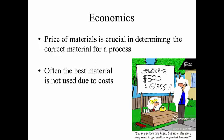So here we are talking about economics. The price of material is another type of material property — an economic property — and it's very crucial in figuring out whether you're going to use a material for a process. Sometimes we have really good materials but we can't use them because of the cost. You can see this kid here in the picture; it's a good example. He's selling lemonade and wants $500 a glass because he's using Italian imported lemons that he's self-squeezing, and it's taking him time and it's very expensive to buy these things.